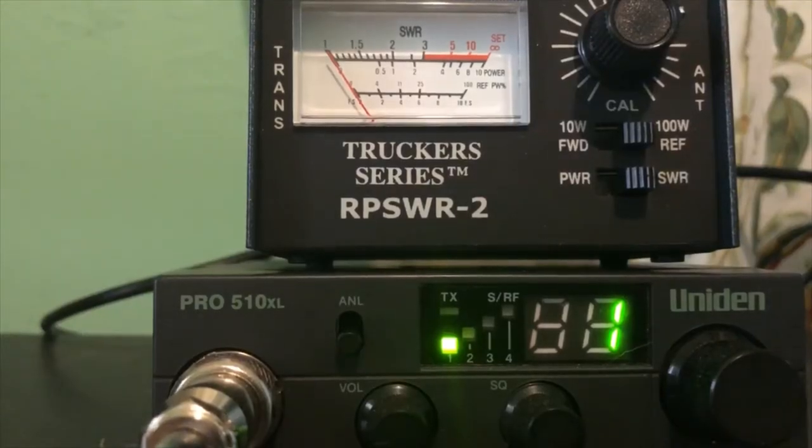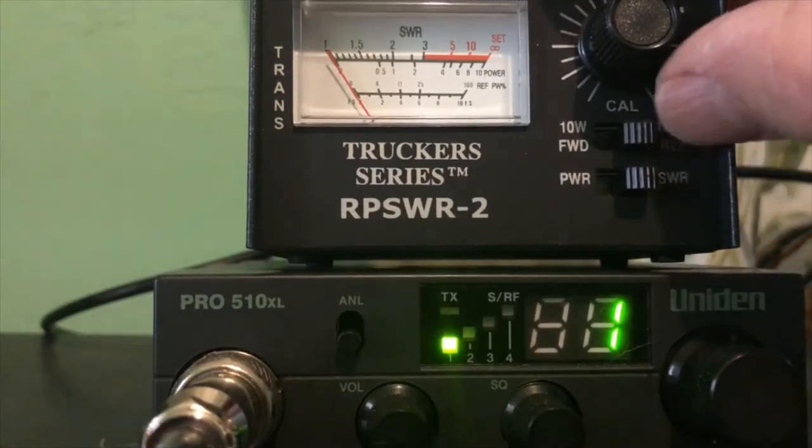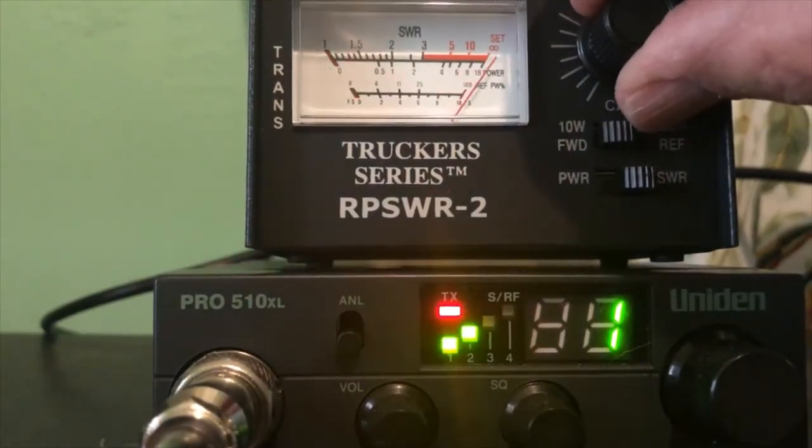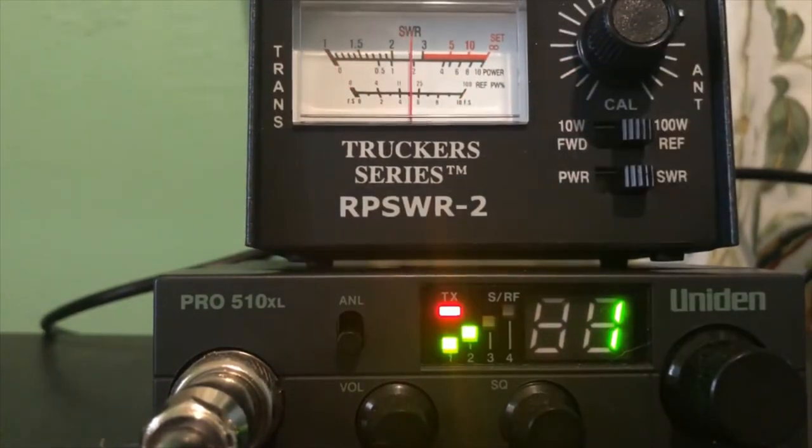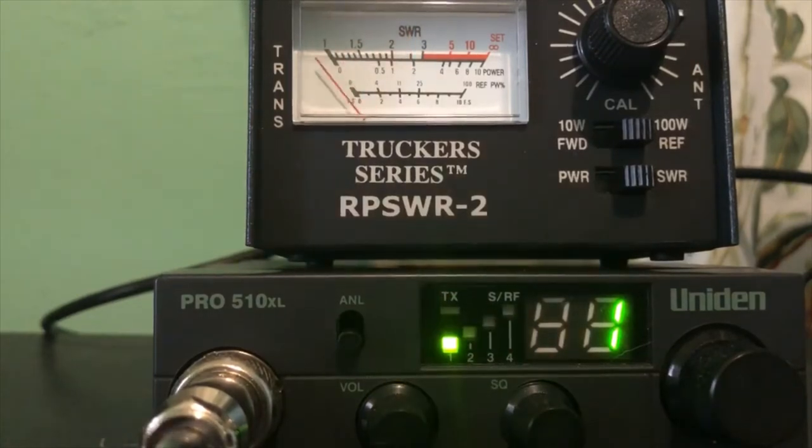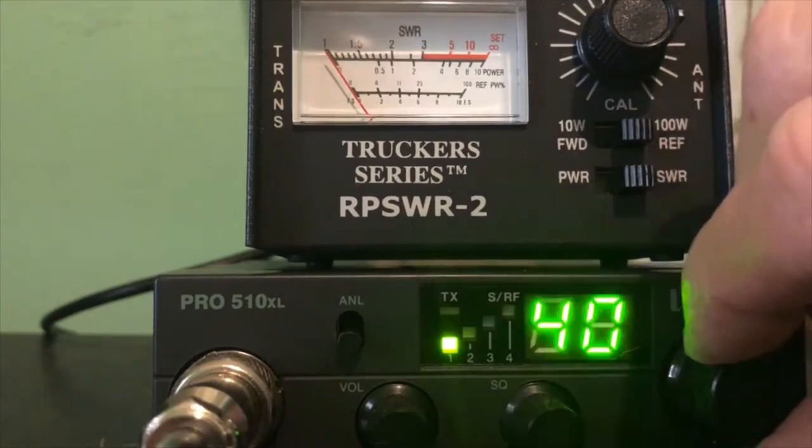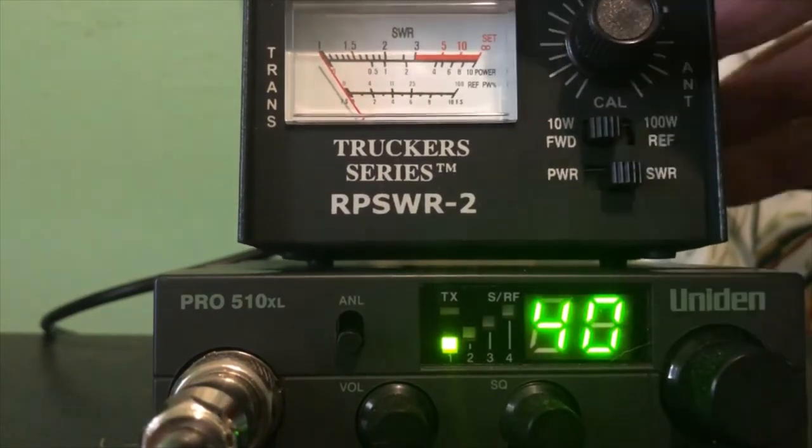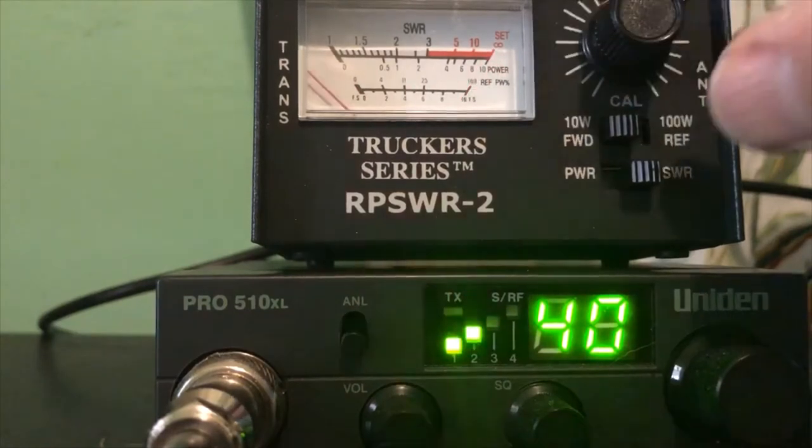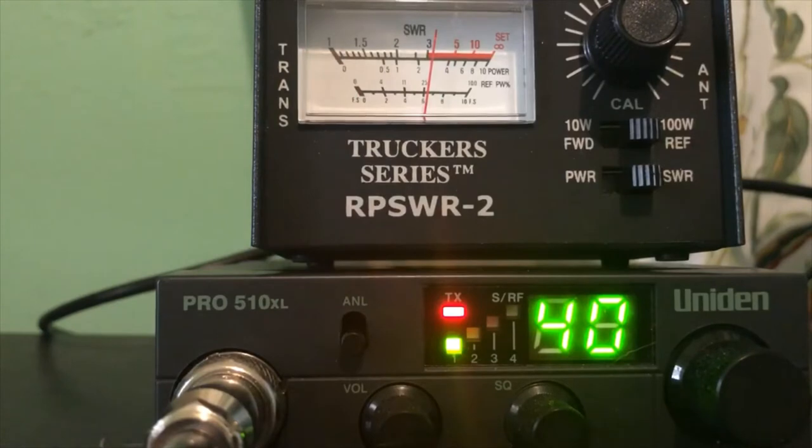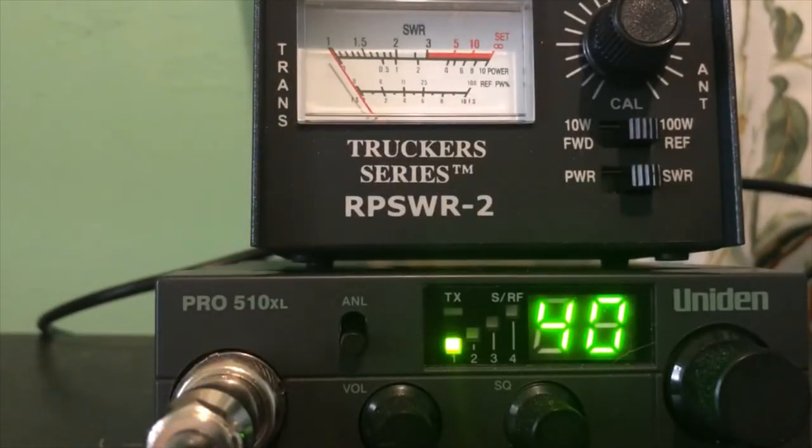All right, we're back at the base station here. We have it on channel 1, and we're right around 2.4. All right, let's go to channel 40. All right, let's go to channel 40 and we're right around 3.1. So that means we're going to have to shorten the antenna, so we're going to go clip a little bit off of each end and I'll be right back.